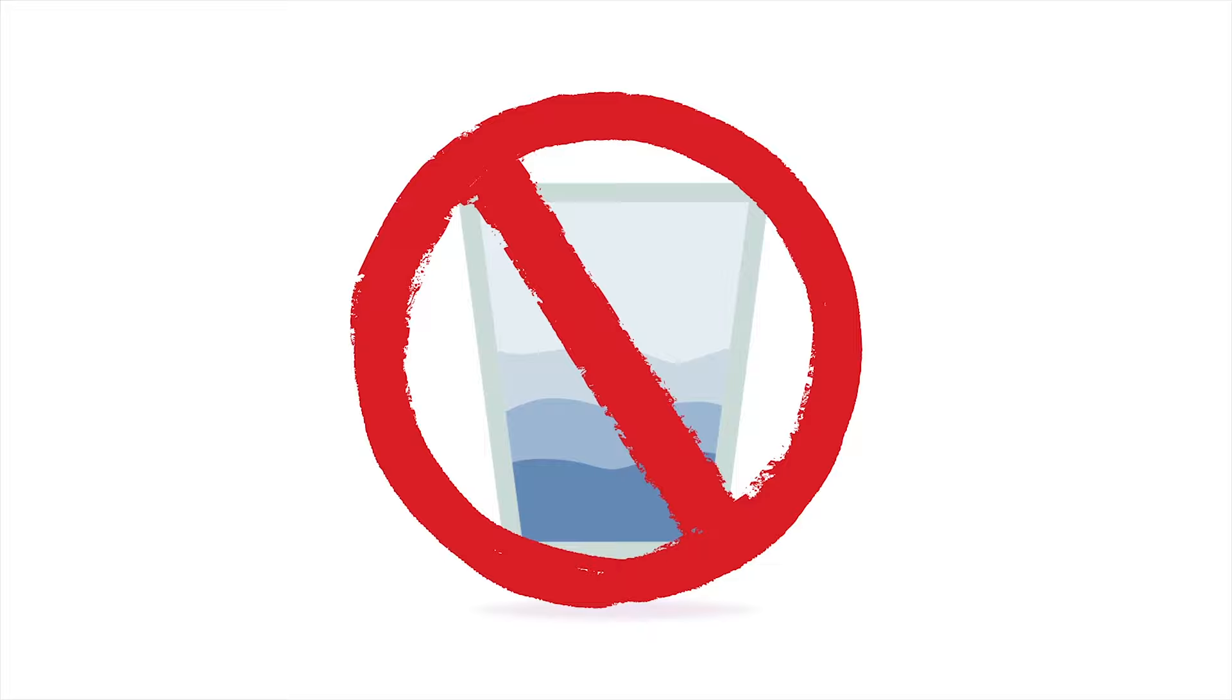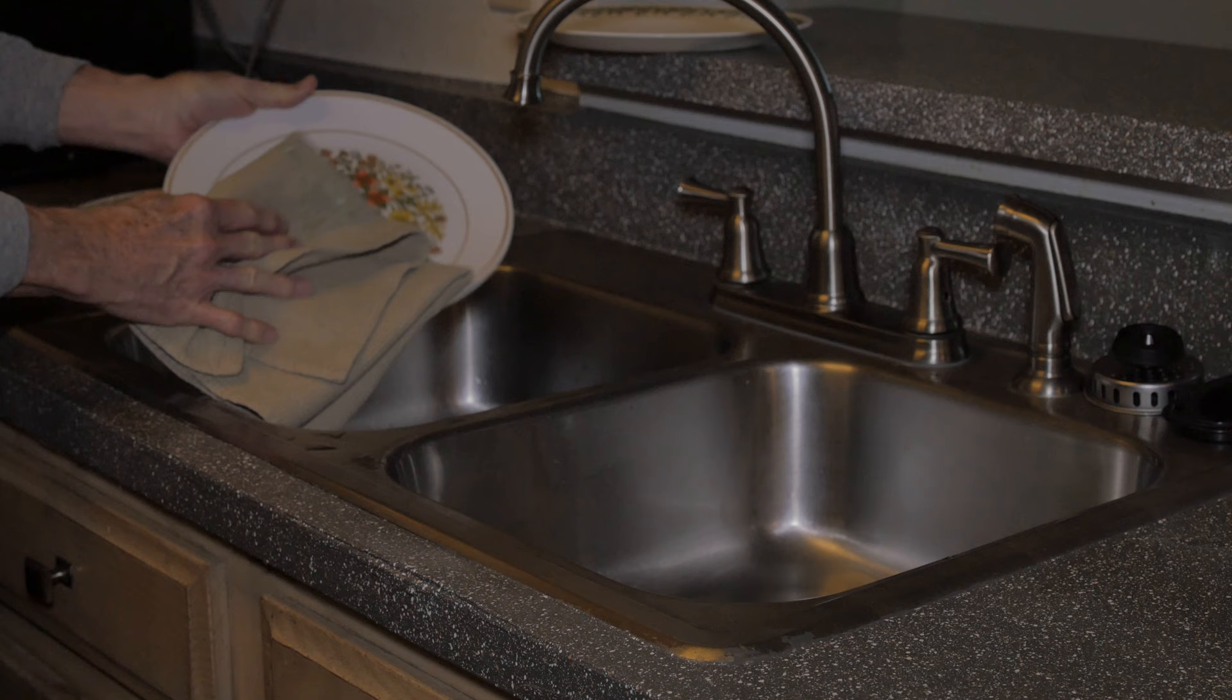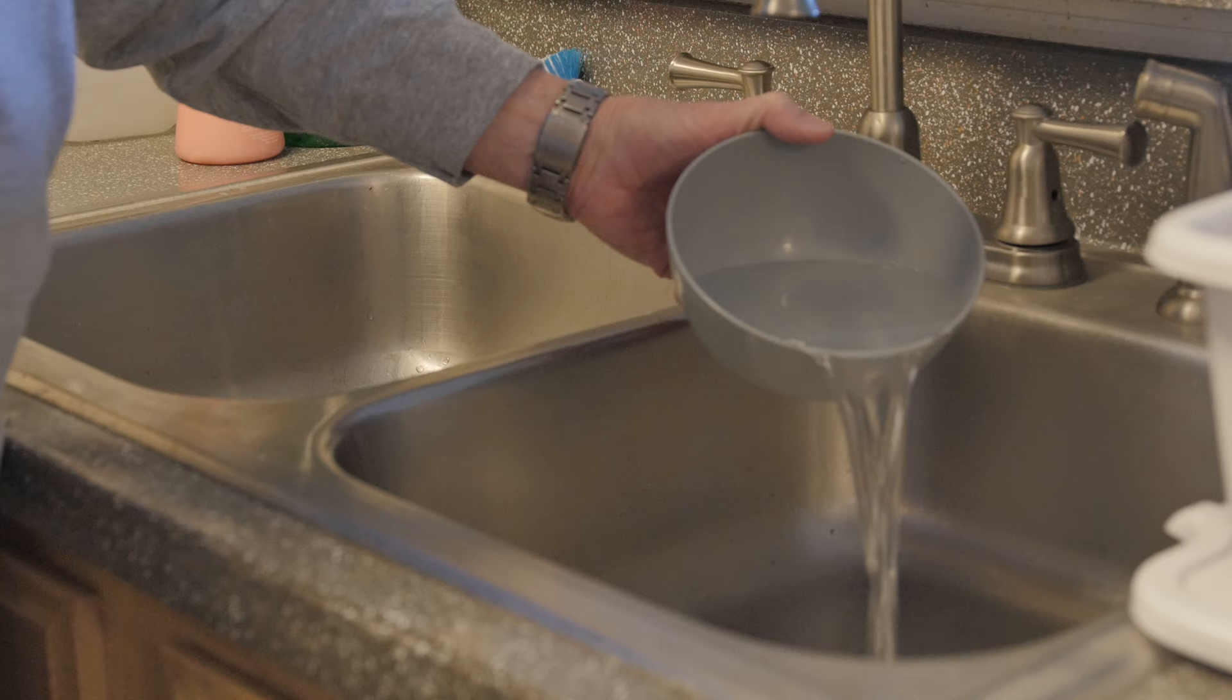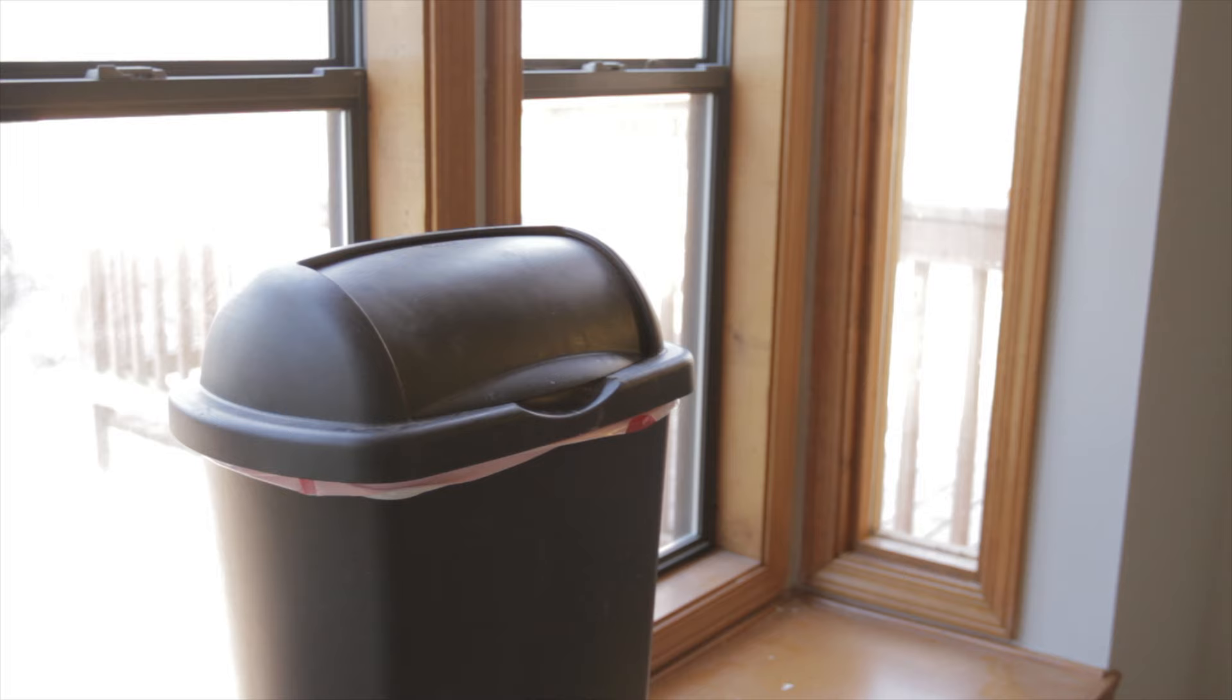Keep all food, including pet food, in tightly sealed containers. Wash and put away all dishes, leaving the sink empty. Wipe down countertops, store sponges in zip-top bags, and empty pet food and water bowls, or keep them covered overnight.